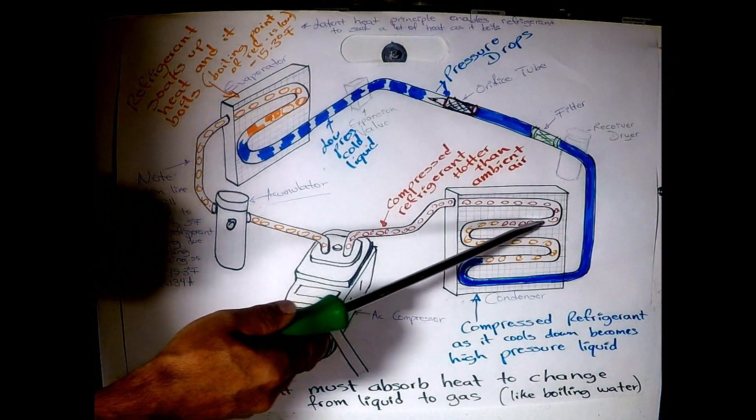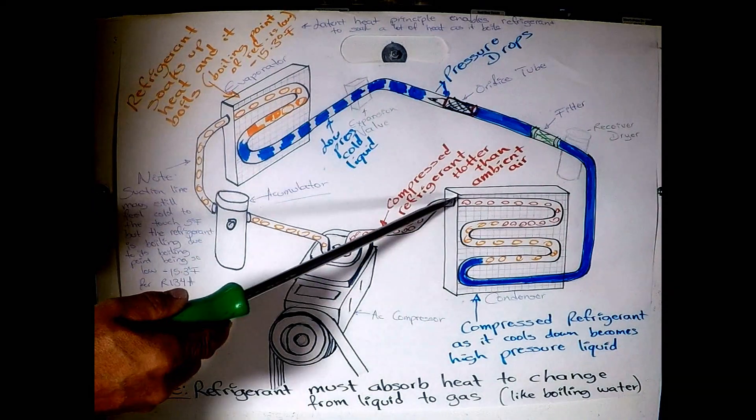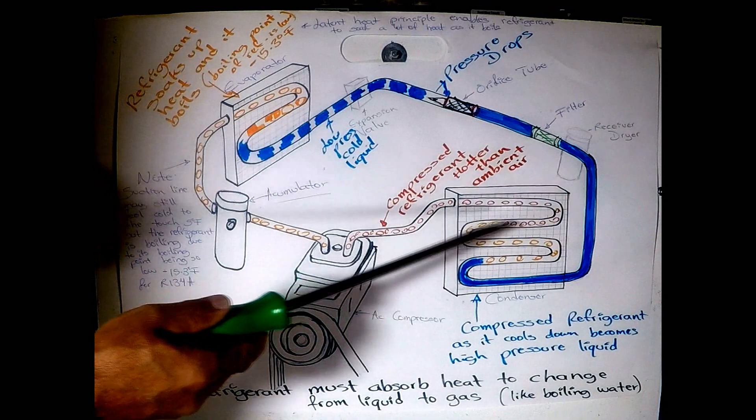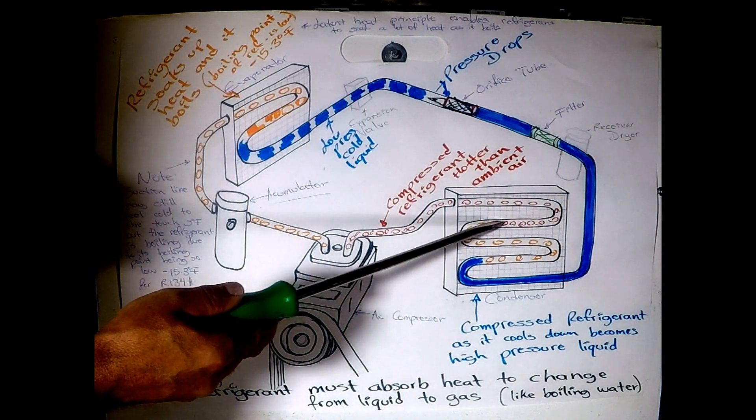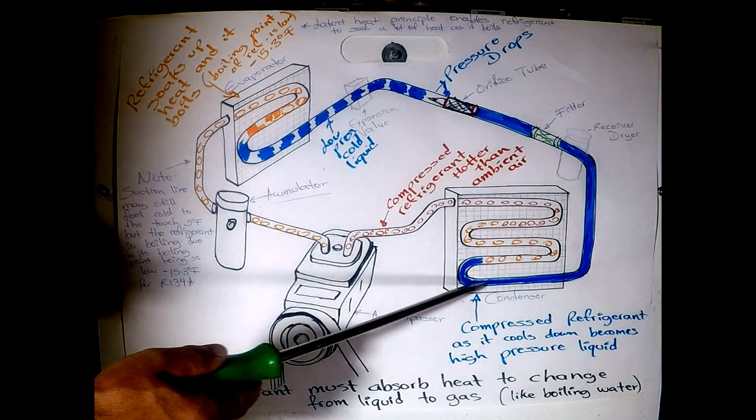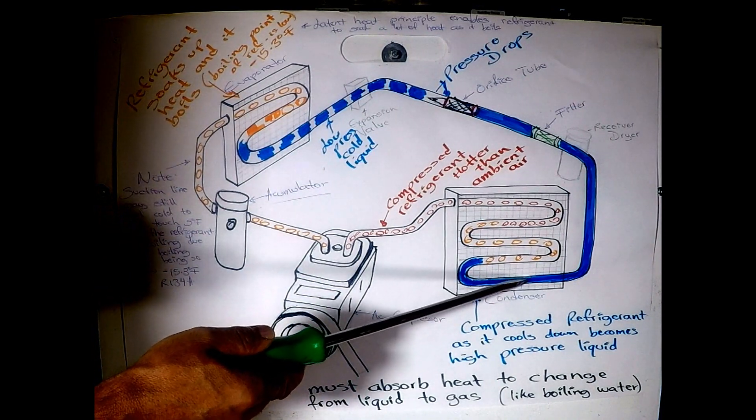As it flows through the condenser, it gives up heat. Because it's hotter than the ambient temperature, it's going to give out a lot of that heat. But as it does, it changes from a highly compressed gas to a liquid, and that's why this line is called the liquid line.